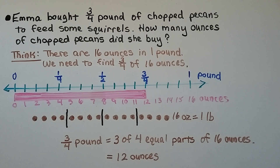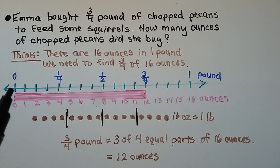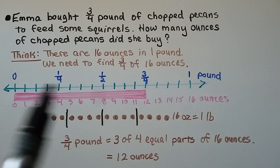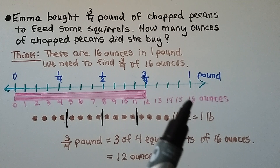Emma bought 3/4 pound of chopped pecans to feed some squirrels. How many ounces of chopped pecans did she buy? There are 16 ounces in one pound, so we need to find 3/4 of 16 ounces using a number line. We start at zero, and one pound equals 16 ounces.